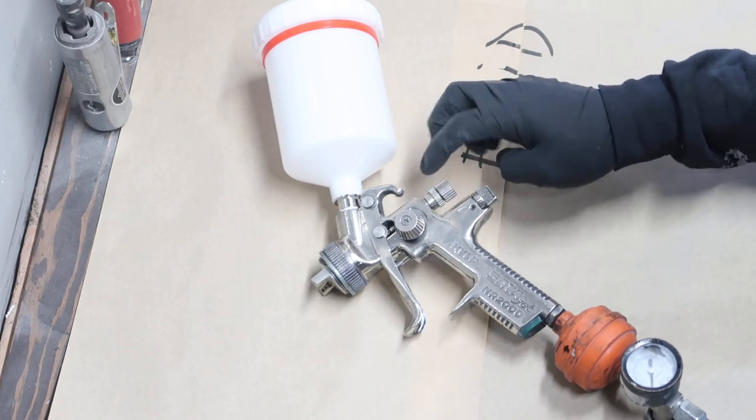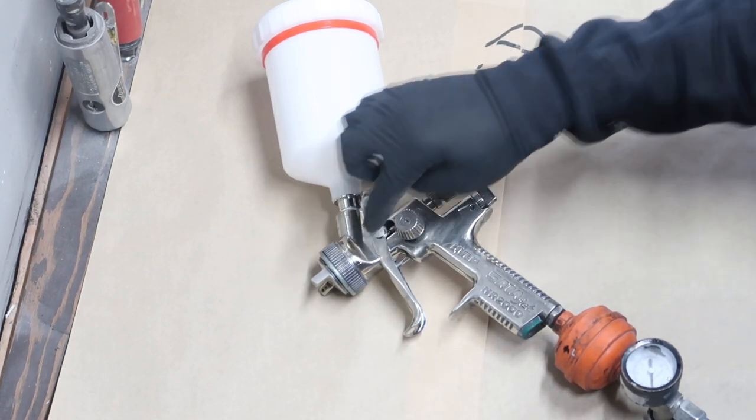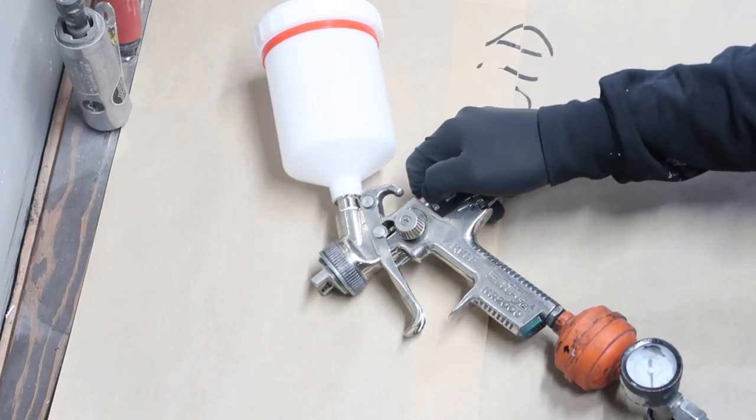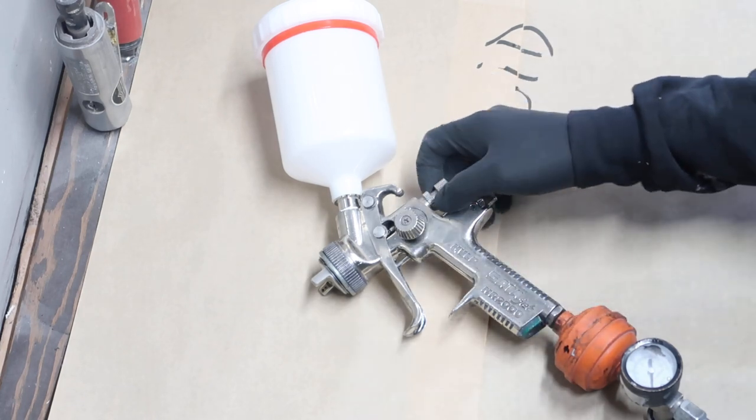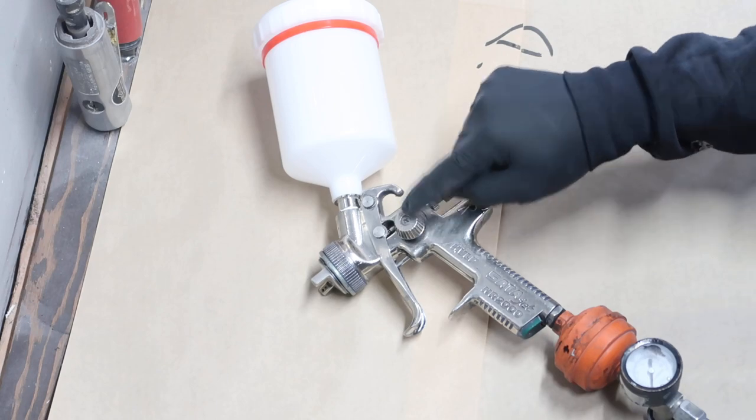This thing has two knobs. One is setting up the fluid, and the other one is just to lock it in place. Because as you spray, this could be moving and you do not want that.